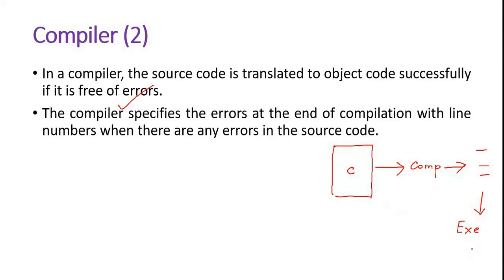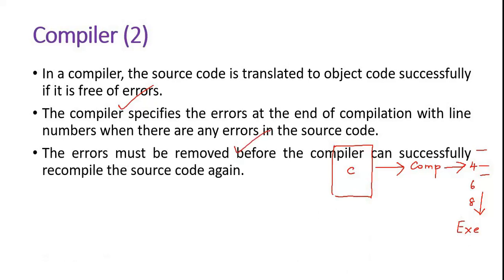After execution, you get the object code so the machine understands and gives the required output. But if there is some error, the compiler will indicate — fourth line there is a mistake, sixth line, eighth line. The compiler reads the entire program and displays all the errors. You need to rectify all the errors, and then recompile.